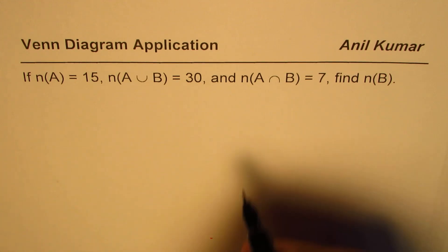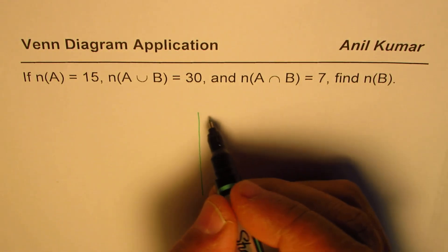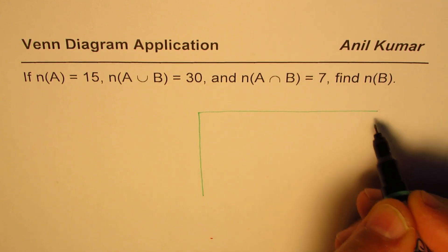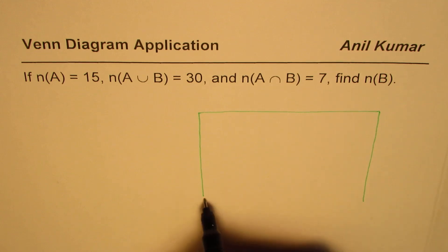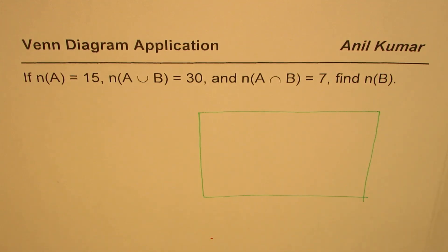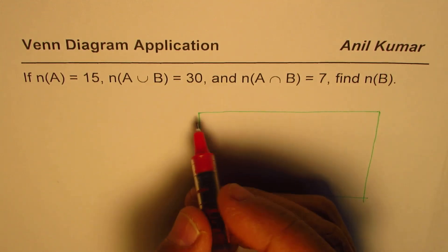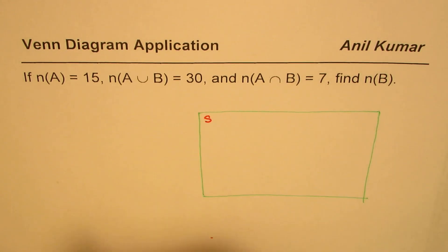Such questions can be answered with the help of Venn Diagram. So, let me make one here. This is our total sample space, which sometimes we call universal set also, and sometimes we are using the word S for sample space.